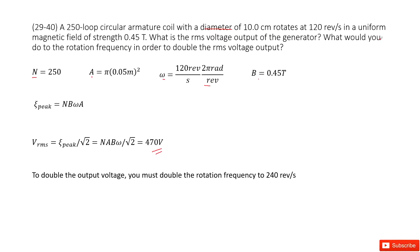what would you do to the rotation frequency in order to double this output, the RMS voltage? In this equation, if epsilon, or if omega is doubled, of course this output RMS voltage will double, right?